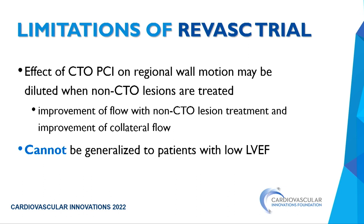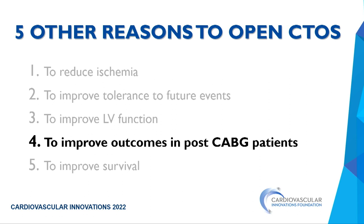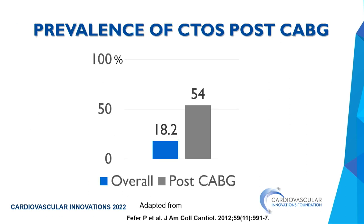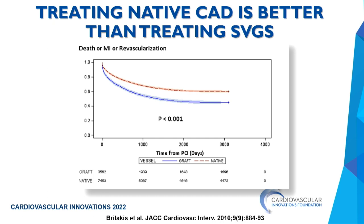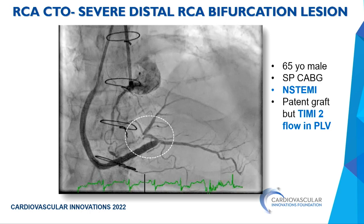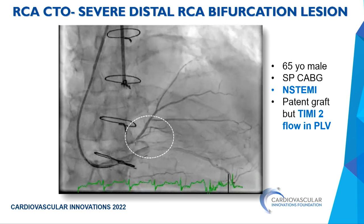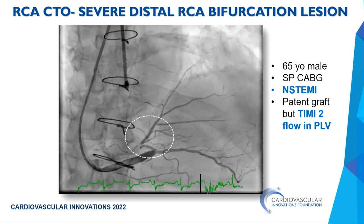Can we improve outcomes in post-CABG patients? The prevalence of CTOs post-CABG is up to 50 percent, caused by competitive flow in the artery when there is severe stenosis. Once a graft is down or failing, treating the native coronary disease is much better than treating SVG. This is observational data from 10,000 patients showing that treating the native vessel is better. Therefore, if you have a non-STEMI post-CABG, you may need to address the CTO to improve flow.